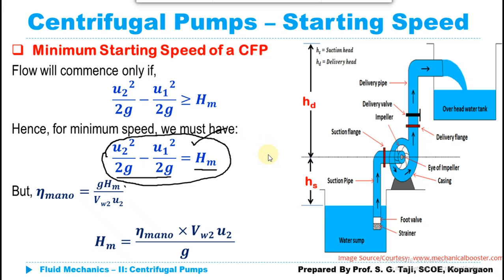Let us talk about exactly the meaning of minimum starting speed. It is that speed at which flow will start to take place through the pump. If the speed is less than this minimum starting speed, there will be no flow through the centrifugal pump and the impeller is only rotating empty. Let us now derive the expression for the minimum starting speed.